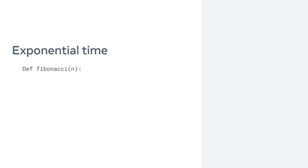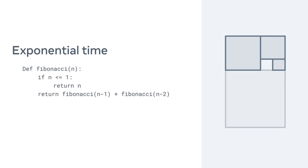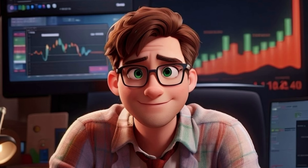Fifth and last is exponential time, which is an algorithm that doubles with each iteration. The Fibonacci sequence is a prime example of this. Refactoring code can be a big task, but understanding algorithmic complexity and how it's calculated makes it easier to optimize code. Now that you know about constant, linear, logarithmic, quadratic, and exponential time, you are one step closer to your goal of being a developer.